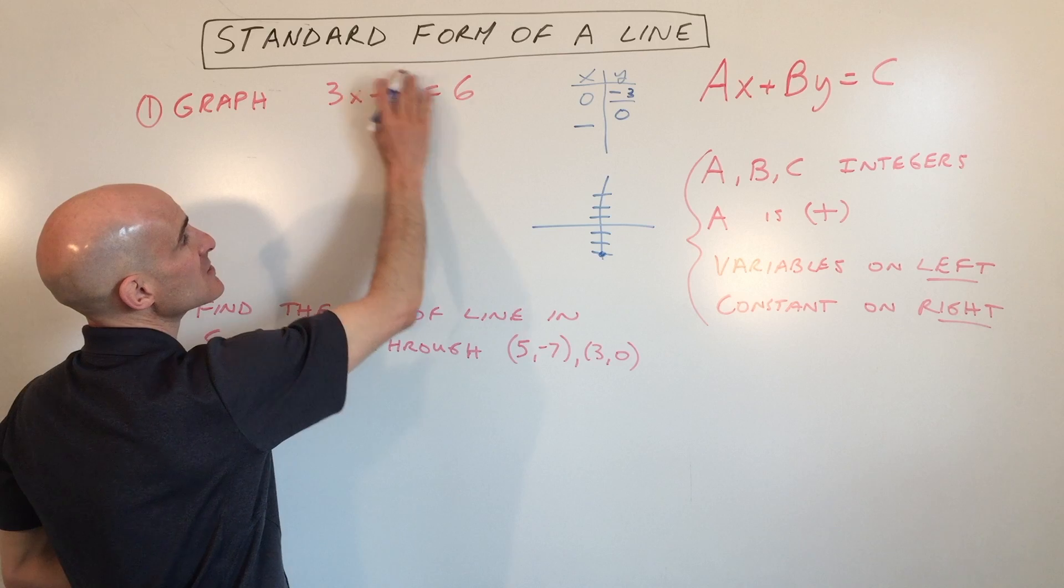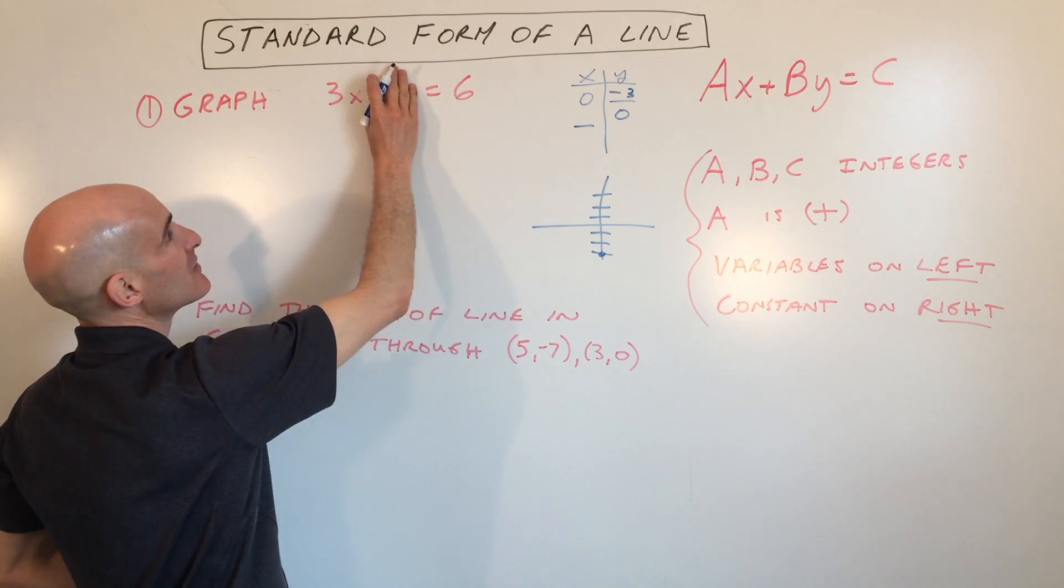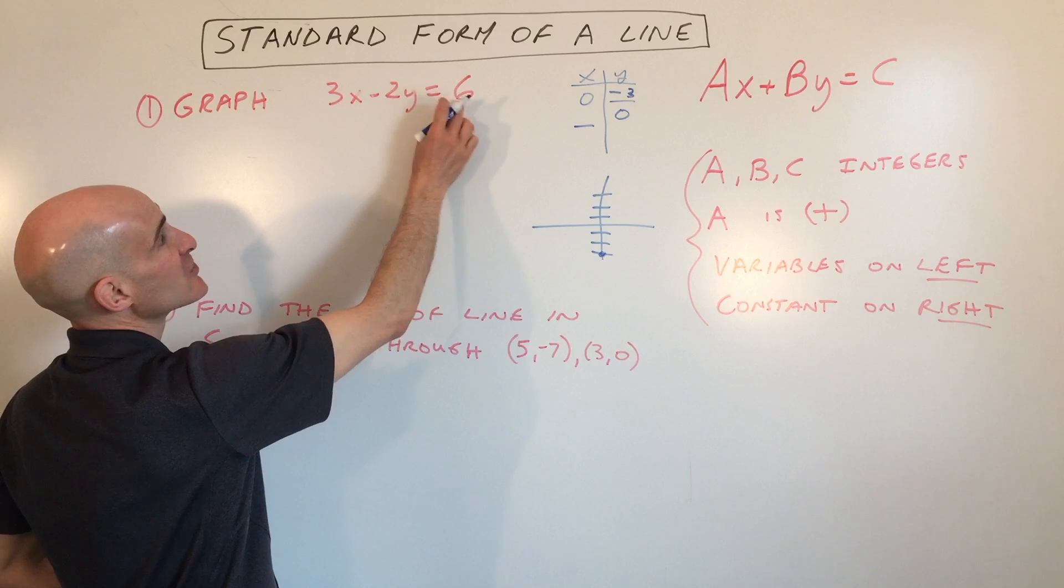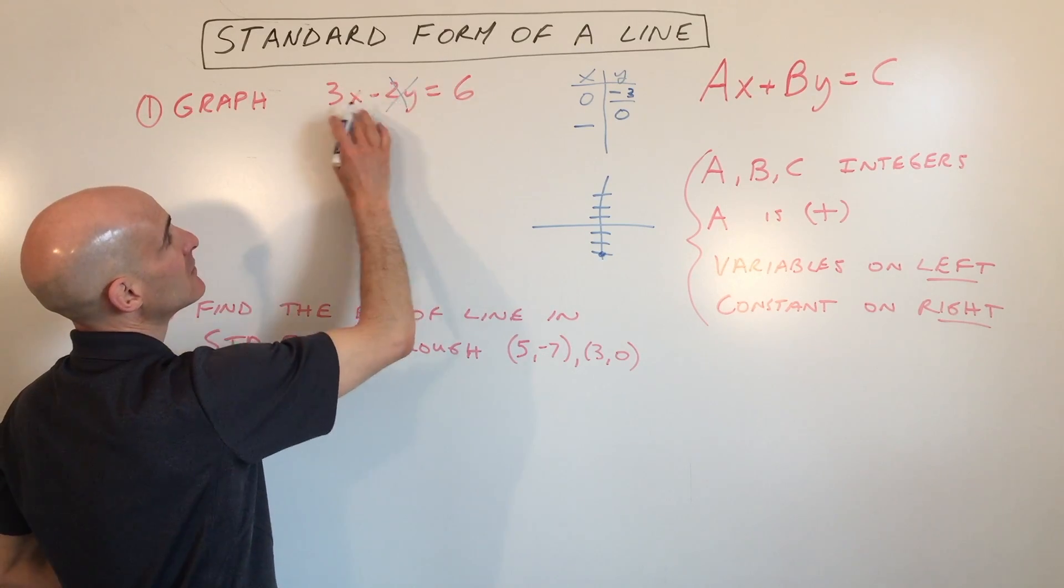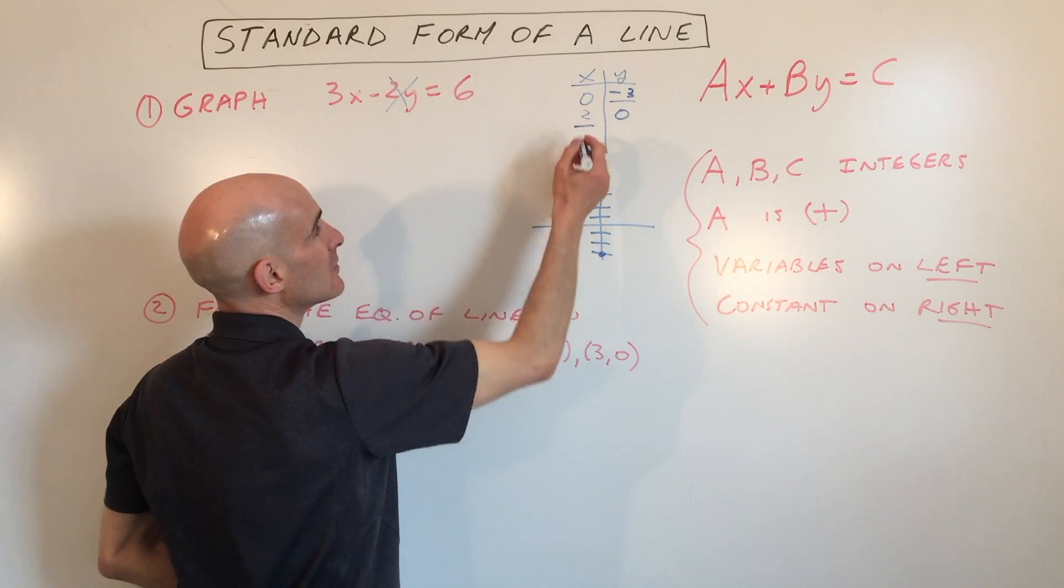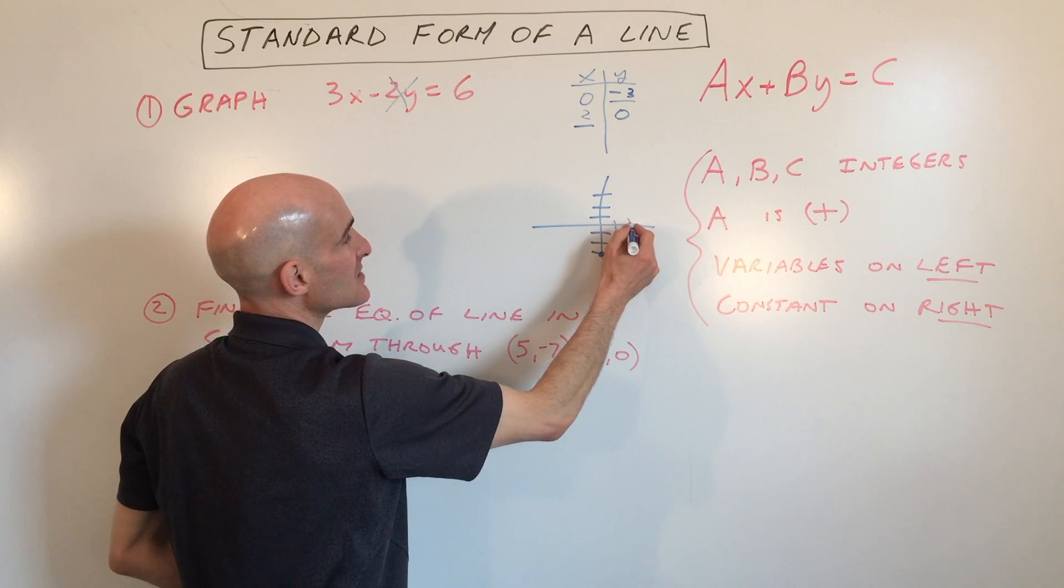If I set y to 0, 0 times anything is 0, that's why I'm covering that up. If I divide both sides by 3, x is 2. So now you can see it's going to cross the x-axis here at 2.